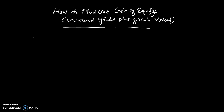So, cost of equity is equal to D1 divided by MP into 100 plus growth rate.